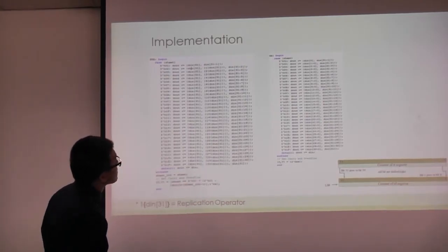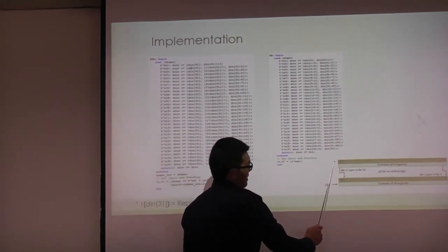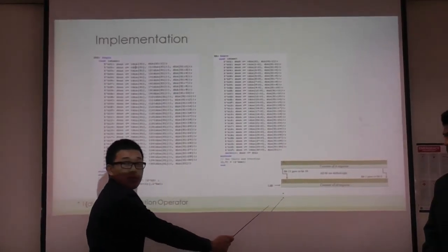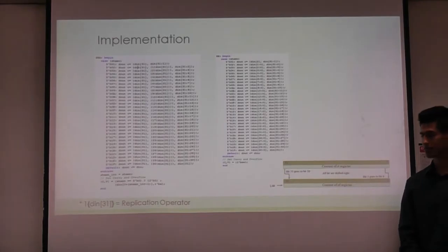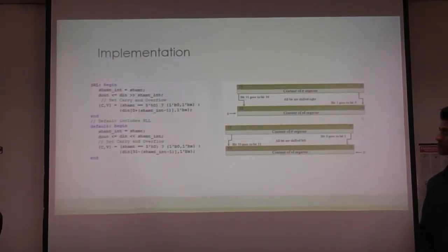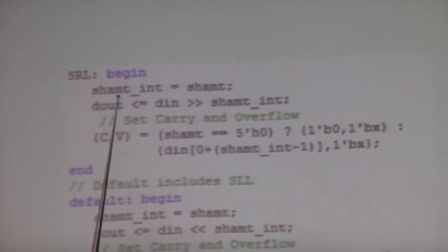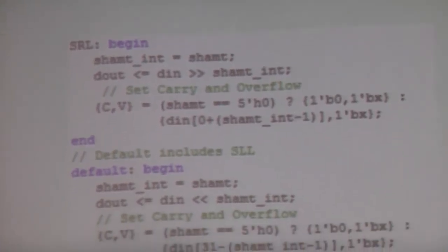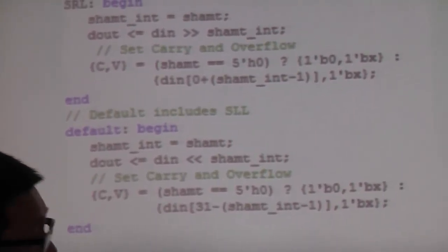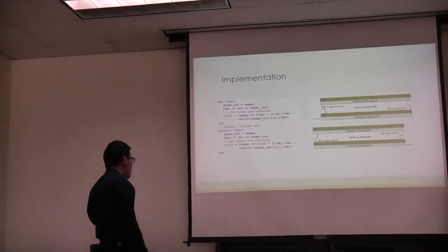For rotate right, all bits are rotated right and the least significant bits wrap to the top. Rotate left follows the same principle in the opposite direction. Shift right logical and shift left logical are simpler — the code casts the value and shifts accordingly, setting flags by the same principles, while shift right and shift left simply shift in zeros.